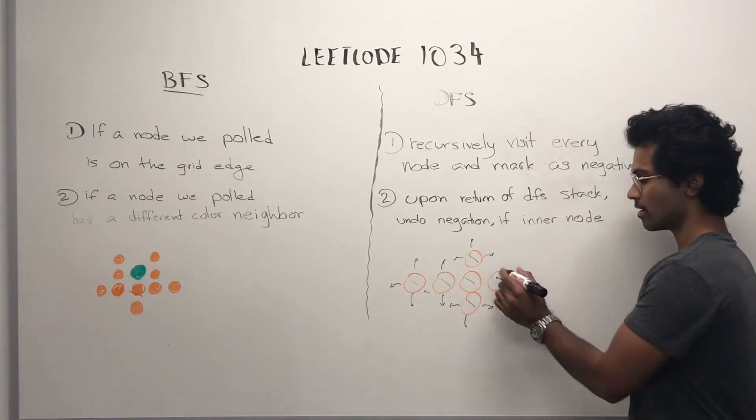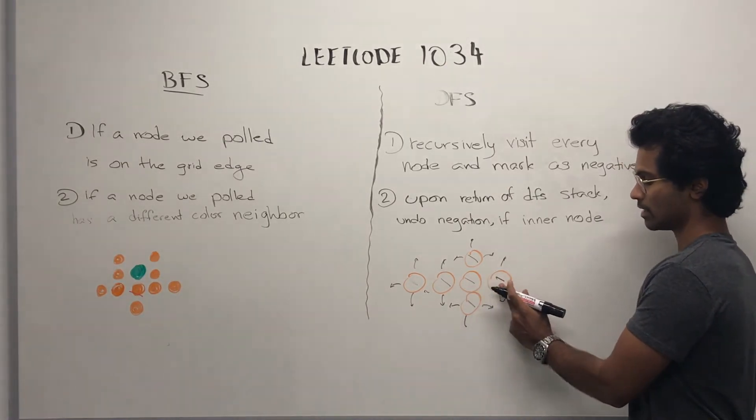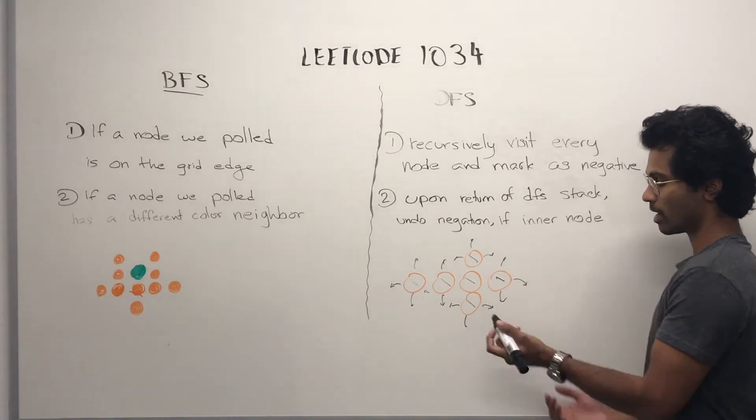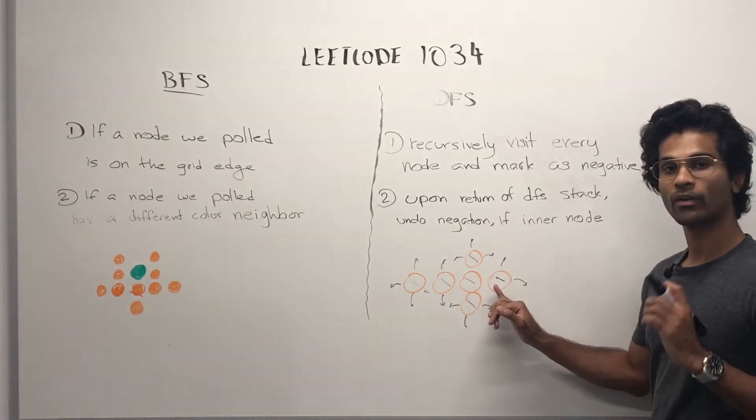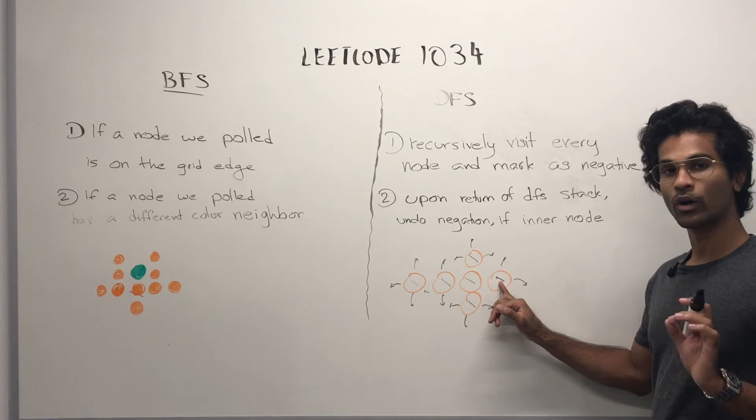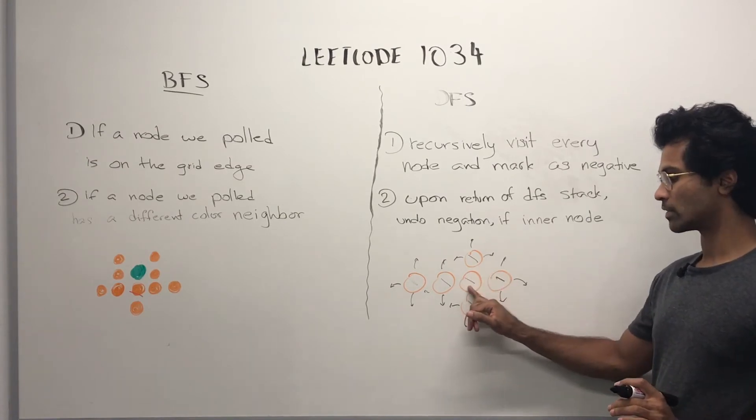That's negated. We go up, down, left is visited, right is out of bounds. And then upon returning recursive stack, we don't undo our negation. Then the recursive stack goes here.